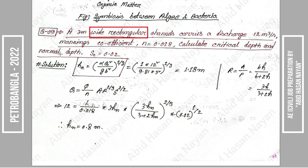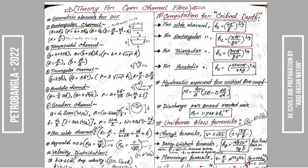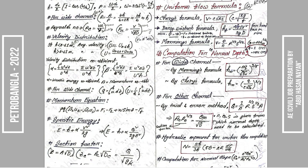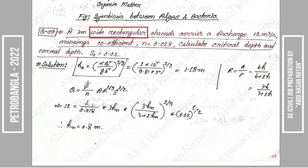We will now find the normal depth. Using Manning's equation: Q = (1/n) × A × R^(2/3) × S^(1/2), in SI units. Here Q = 12 m³/s, with the channel width B = 3 meters. We solve for the normal depth using the Manning's roughness coefficient n and the given bed slope S = 0.02. Manning's formula gives us the normal depth by iteration.